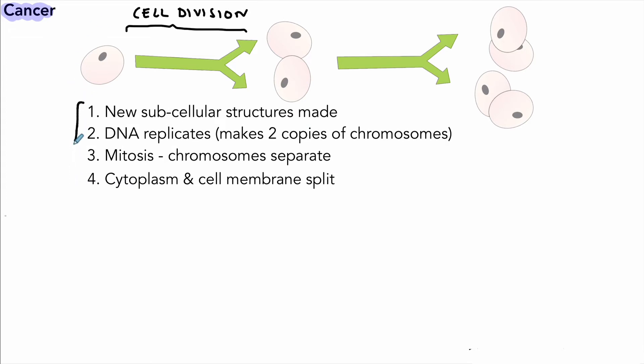And so this is how the cell division happens. And this is a very controlled process. So the body is very good at controlling this process to make the cells it needs when it needs them. Now, sometimes things can go wrong. And this process goes from being a controlled process to an uncontrolled process.